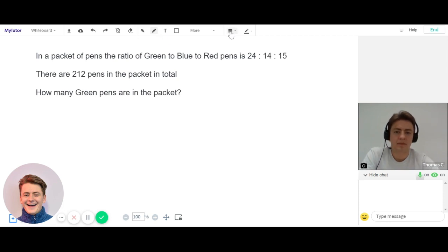Okay, so firstly let's pull out the key information from this question. We know that in a packet of pens, for every 24 green pens there are 14 blue pens and 15 red pens. We're going to mark that 24 as green. The other really important information is that there are 212 pens in the packet in total.